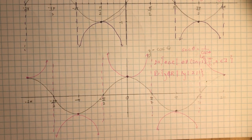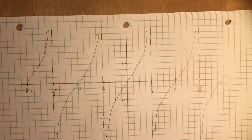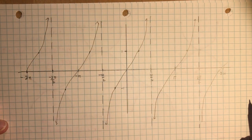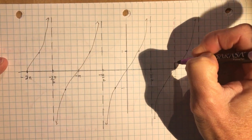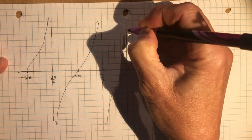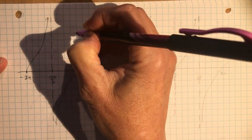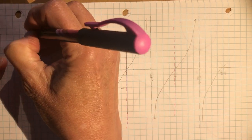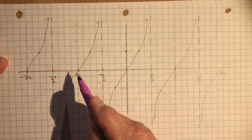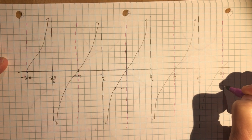Now let's do the tangent function and its reciprocal. The same process as before: we have to find the zeros of tangent and make them asymptotes. Everywhere where we have a zero on the tangent function is going to become an asymptote for the reciprocal. The reciprocal of tan theta is cotangent theta, and we get all our dotted asymptote lines placed in.